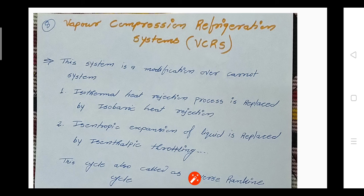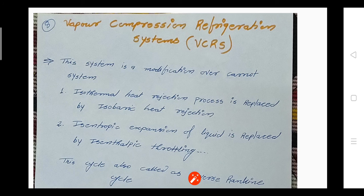The second modification is that in the Carnot cycle the expansion is done with the help of a turbine — isentropic expansion of liquid. Here, that is replaced by isenthalpic throttling, where expansion takes place at constant enthalpy. In the Carnot cycle, expansion is done with the help of a turbine at constant entropy, but here we do the expansion at constant enthalpy using a throttling device.